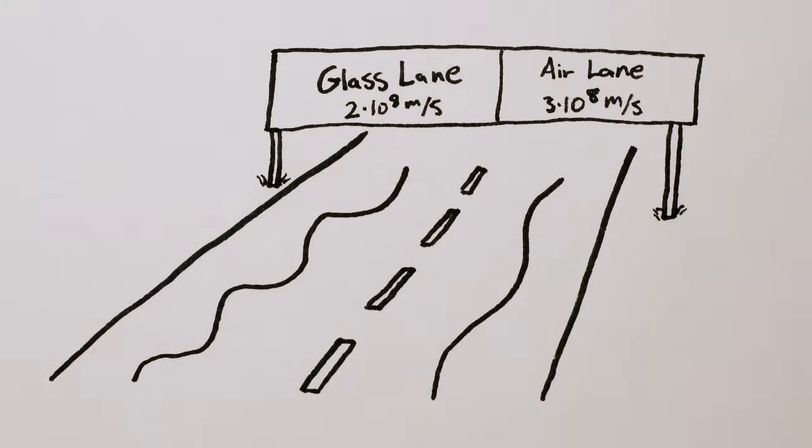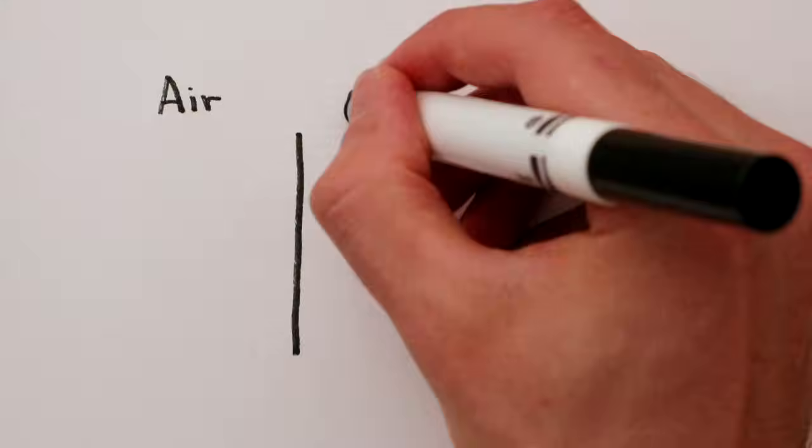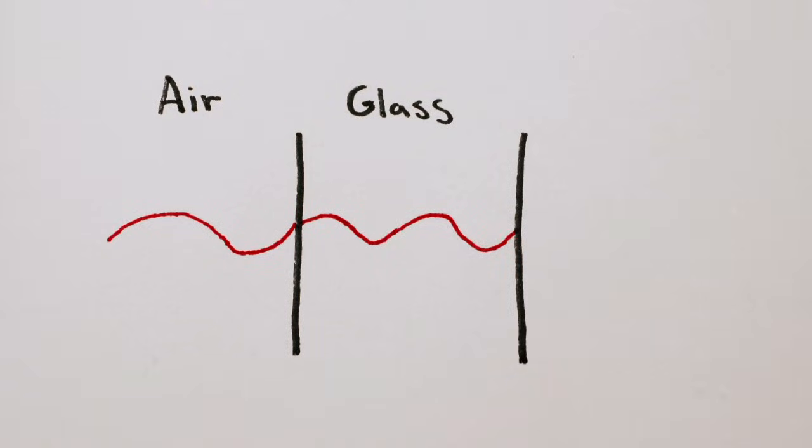Electromagnetic waves simply travel slower through glass than through air. So the wave crests are closer to each other, but the light still oscillates the same number of times per second. It stays the same color.